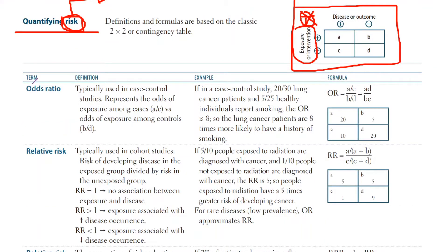Commonly tested ways to quantify risk involve the odds ratio and relative risk. They are very similar to each other because they sort of tell the same story but from different perspectives. Imagine you're a detective and you ask the mother what happened at the crime scene — she tells you a story — and then you ask the father and he gives a different story but describes the same events from his perspective. That's exactly what odds ratio and relative risk are.